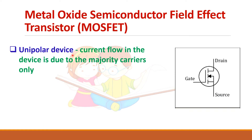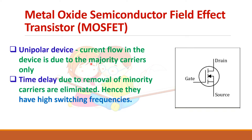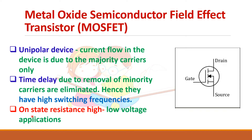MOSFET is a unipolar device, meaning that the current flow is due to only majority carriers. Since only majority carriers have to be removed during the turn-off process, it can be used for high switching frequency because the turn-off time will be very less. But the only drawback is that the on-state resistance of the MOSFET is high, so it is normally used in low voltage applications.